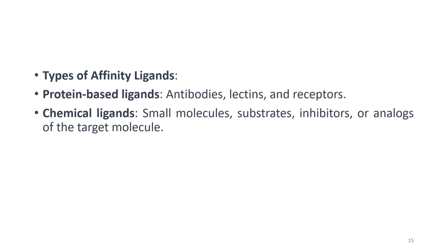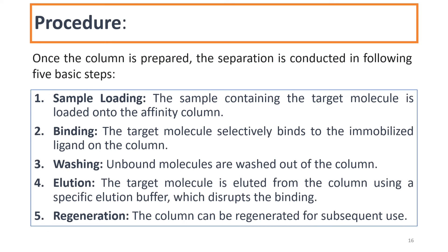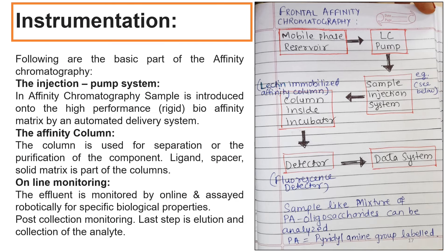That protein is now on the stationary phase, attached to it. To elute that particular protein out of the column, I have to make changes in the mobile phase. I may change the pH of the mobile phase, or the ionic strength can be changed, or the concentration of a competing ligand can be added to the mobile phase so that the separated protein can now be eluted out.